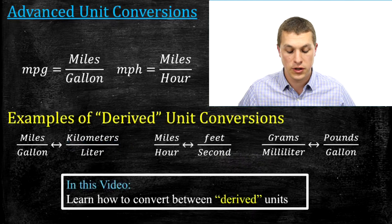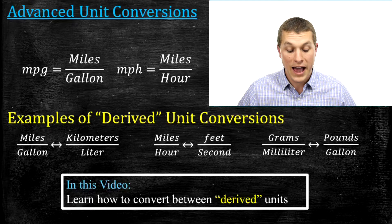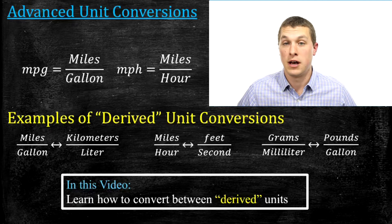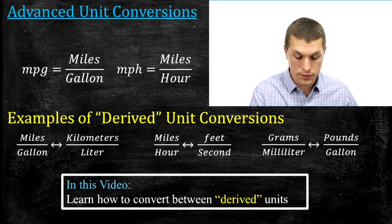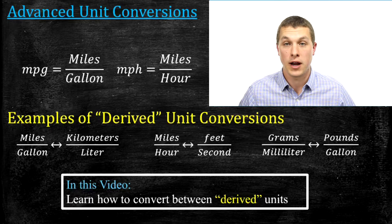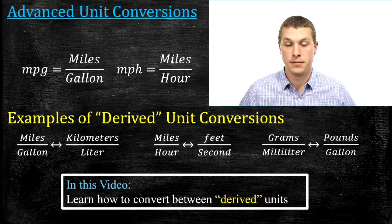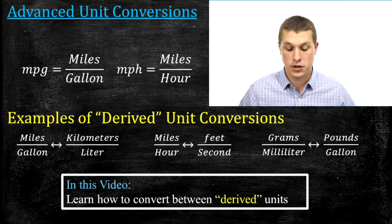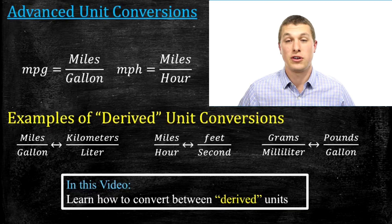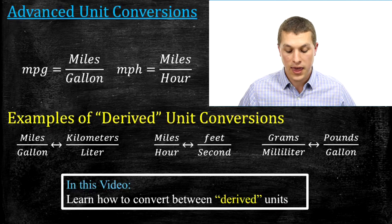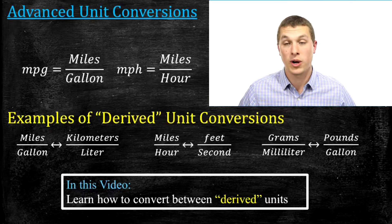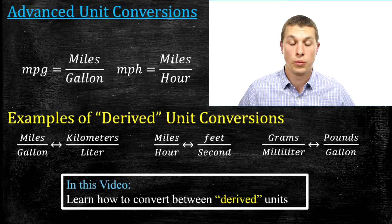Here are some examples of the unit conversions we might do here: miles per gallon to kilometers per liter, or miles per hour to feet per second. We could also go grams per milliliter to pounds per gallon. There are all sorts of these derived units around, and in this video we're going to learn how to go between them.